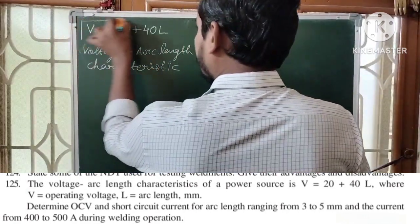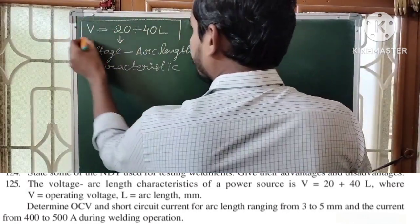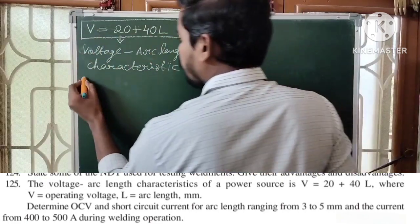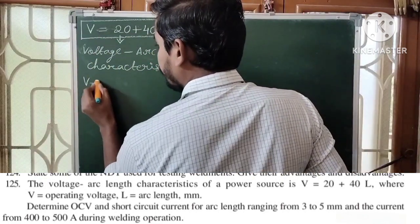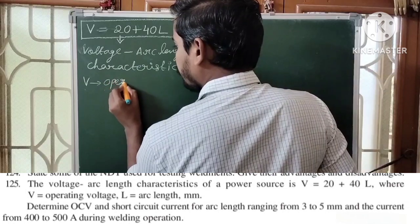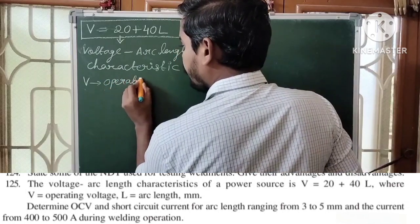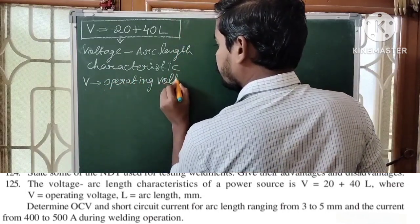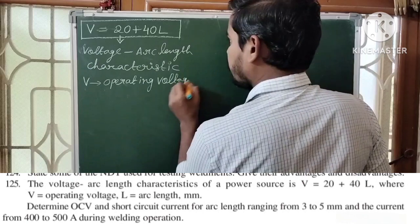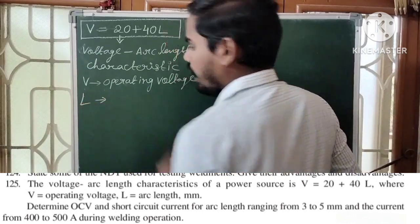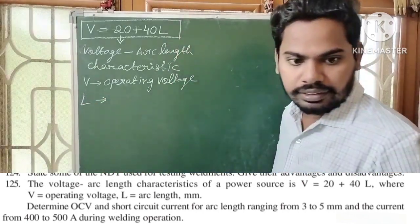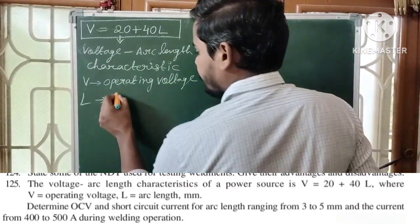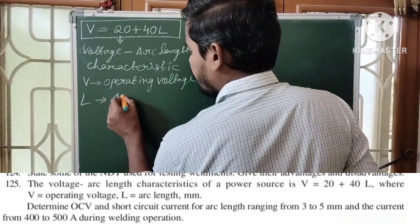In this equation, V = 20 + 40L, V is called the operating voltage and L is called the arc length.